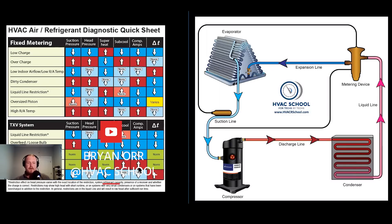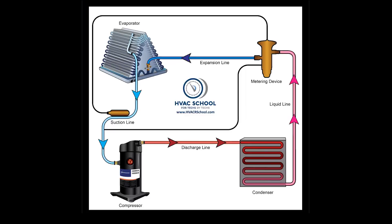Let's talk about one of the most common misdiagnoses that technicians get, or confusions they have about restrictions. A common thing that techs believe is that if you have a liquid line restriction — say a clogged liquid line filter dryer, a metering device that's over-metering meaning it's not allowing enough flow through it, or a service valve that's not open all the way — they think you're going to have higher head pressure.